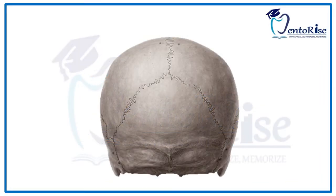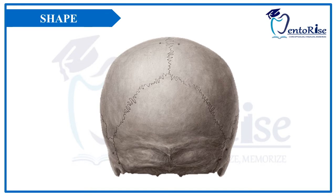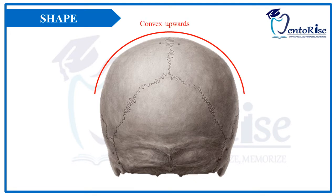The first heading to be considered under Norma Occipitalis is the shape of the skull from this aspect. As we can see from the figure, Norma Occipitalis is convex upwards, and then on each side it is flattened below.